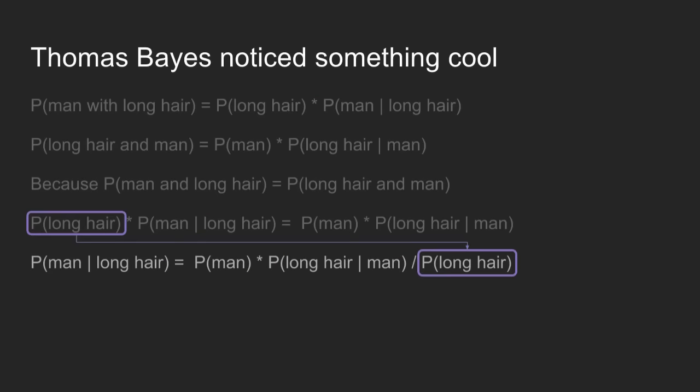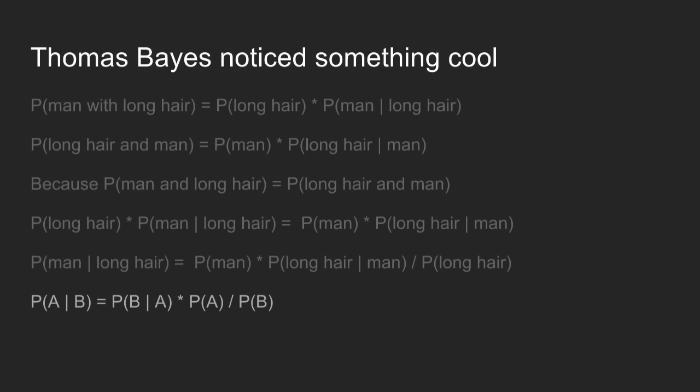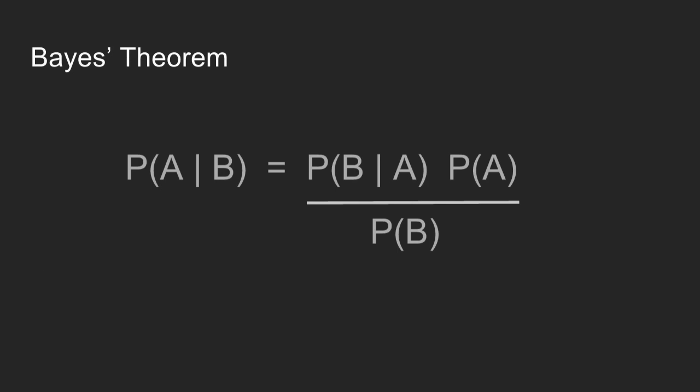Since those two things are equal, the expressions they equal are also equal to each other. With a little algebraic sleight of hand, we now have a formula for the probability that someone is a man given they have long hair. We can generalize that with A's and B's, and now we have Bayes' theorem — one of the top ten most popular math tattoos of all time.